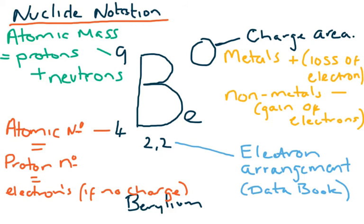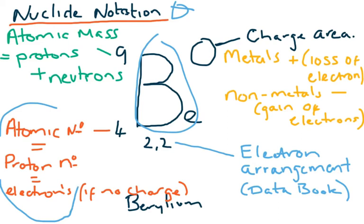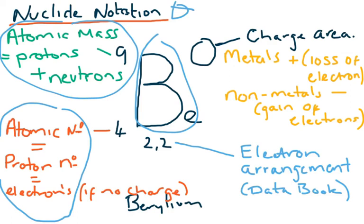One way of showing most of this information is what is called nuclei notation. In this you get a symbol for the element — not always obvious as some elements were originally named in Latin. You get given the atomic number, which is always the number of protons present — and if the atom has no charge, also the number of electrons. You get given the atomic mass, which is the number of protons plus the number of neutrons. To find the number of neutrons, take the atomic number away from the atomic mass — in the case given, nine minus four equals five neutrons.